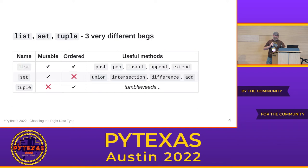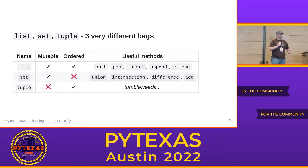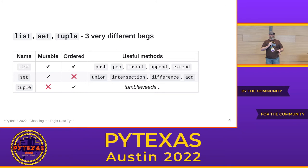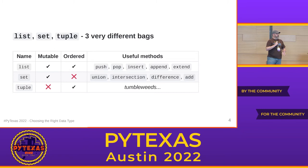So I promised I'd get into data types. I'm going to start with Python's three very different bags: lists, sets, and tuples. They're all bags, they're all collections — a jumble you put things into so you can do things with them. The properties of these three different bags are what set them apart. There are two big properties I'll focus on. Property number one is mutability or immutability. Mutable means it can be changed in place; immutable means it can't. A string is immutable — if you concatenate two strings, a third string is created and the original two are destroyed if no longer used.